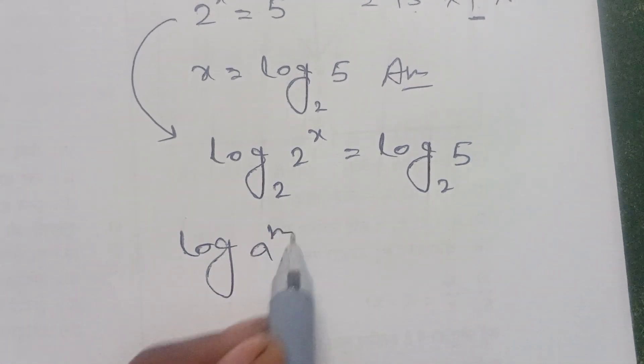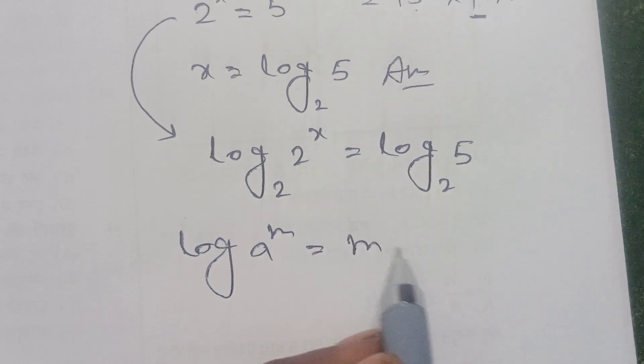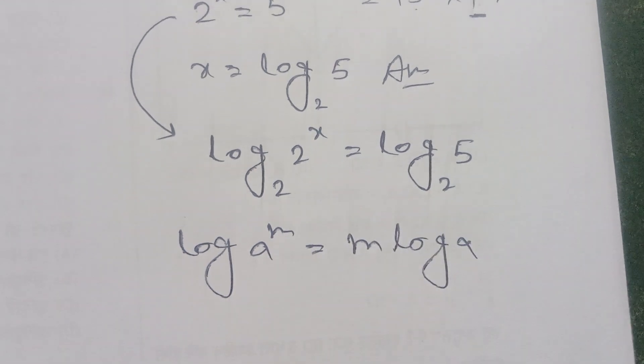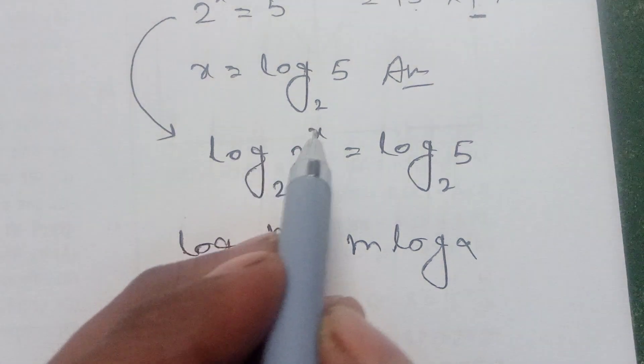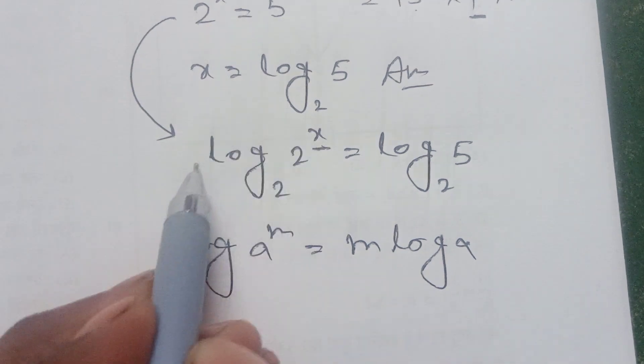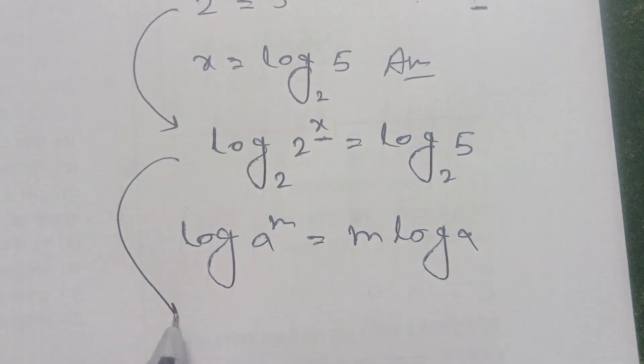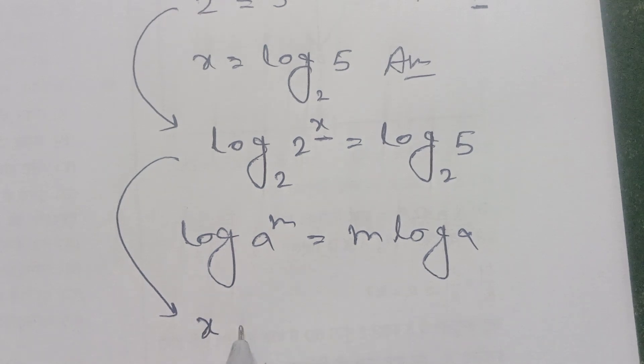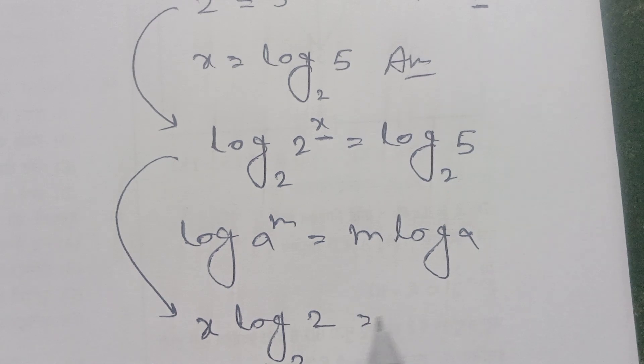Log of a to the power m is equal to m log of a. This power rule. So x log base 2 of 2 is equal to log base 2 of 5.